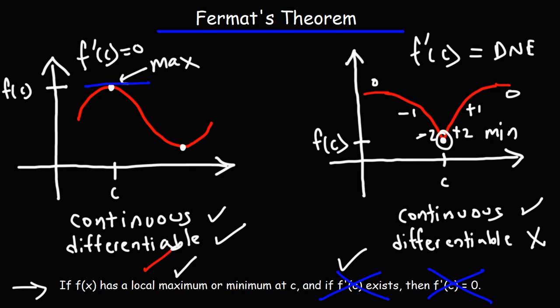So the basic idea behind Fermat's theorem is that if the function has a local max or minimum like we have here, and if it's differentiable or if f'(c) exists at that point, then the slope of the tangent line at those points will be equal to zero.